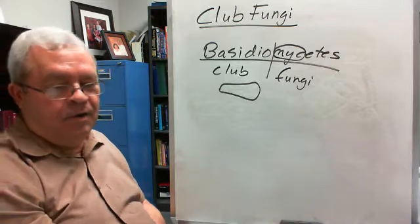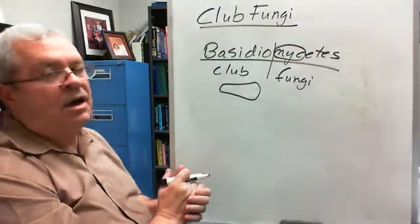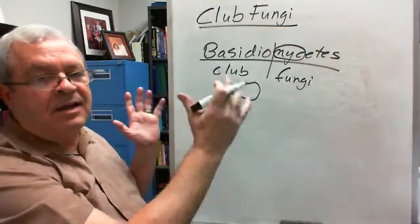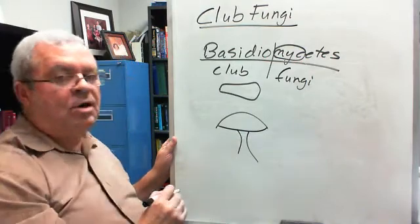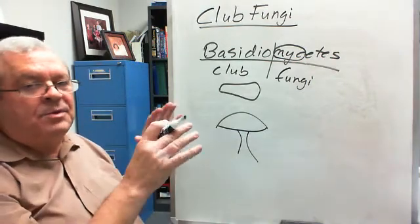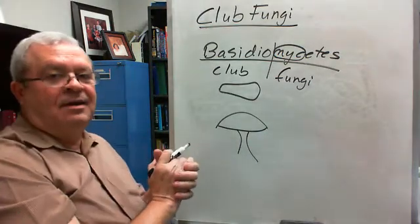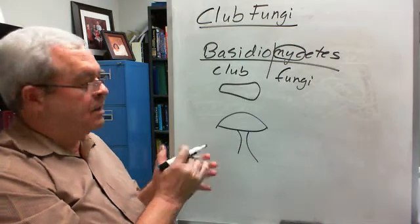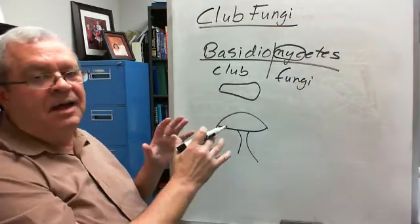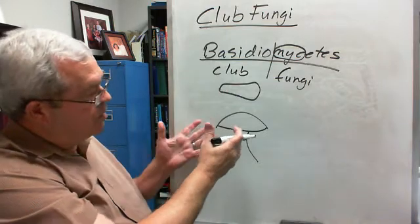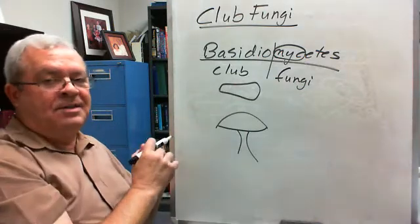The basidiomycetes are the club fungi. What type of reproductive structure is produced by the club fungi? These are the category of fungi that makes mushrooms. There are other forms, not just mushrooms, that are produced by the basidiomycetes. But the typical-looking mushroom — there are some others that sort of look like them that are basidiomycetes.